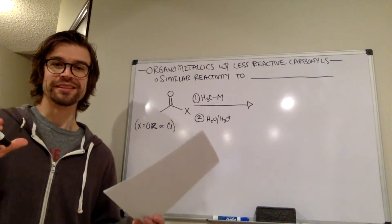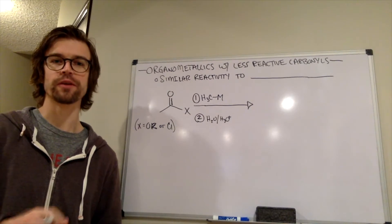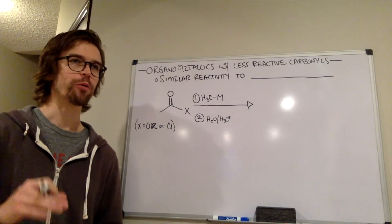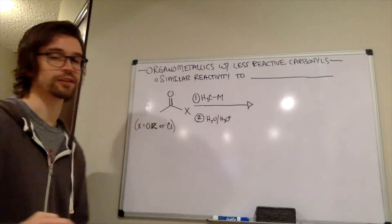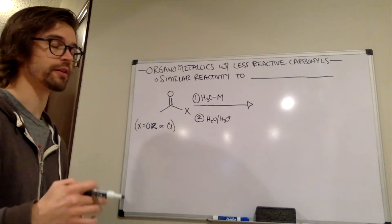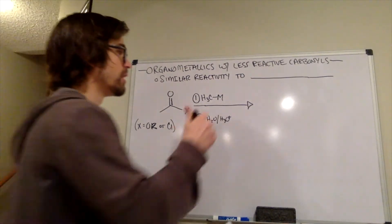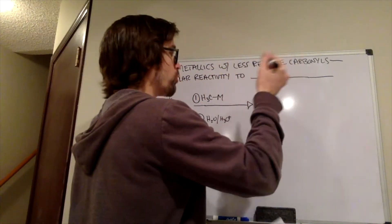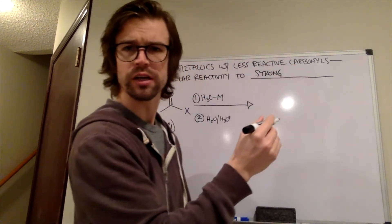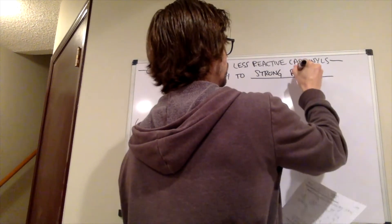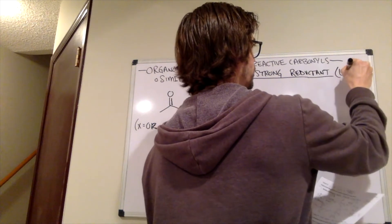All right, so we've seen these less reactive carbonyl derivatives with reductants, and now we're going to look at them with our organometallic reagents. And what we saw with the organometallics is that they looked a lot like an H-. The organometallics, the organolithiates and the Grignards, have similar reactivity to our hydride reagents, especially our more reactive reductant, similar to our strong reductant, which was lithium aluminum hydride.